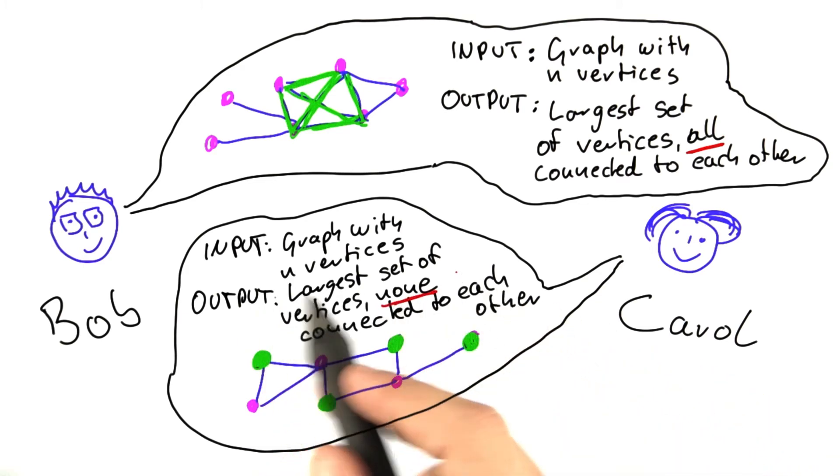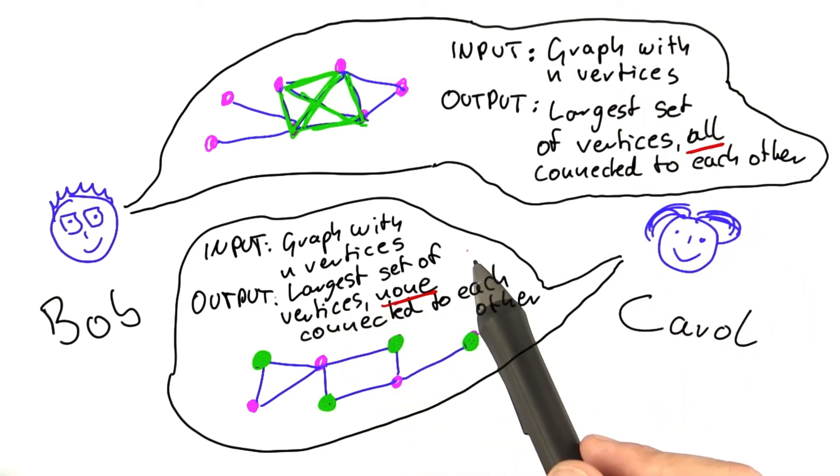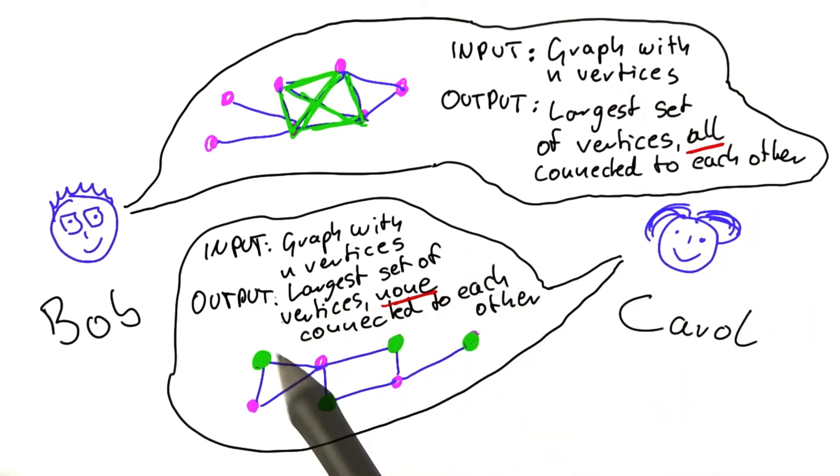But everything else is the same. You're given a graph with n vertices, you're looking for the largest possible set, and all it's about is the connections that these vertices have to each other.